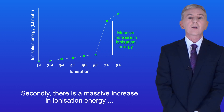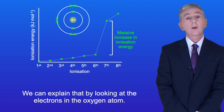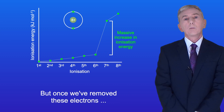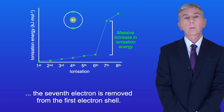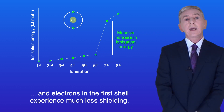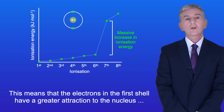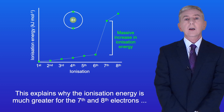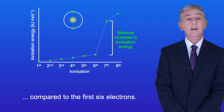Secondly, there is a massive increase in ionization energy when we remove the seventh electron. We can explain this by looking at the electrons in the oxygen atom. The first six electrons are all found in the second electron shell, but once we've removed these electrons, the seventh electron is removed from the first electron shell. Compared to the second electron shell, the first electron shell is closer to the nucleus, and electrons in the first shell experience much less shielding. This means the electrons in the first shell have a greater attraction to the nucleus, which explains why the ionization energy is much greater for the seventh and eighth electrons compared to the first six.